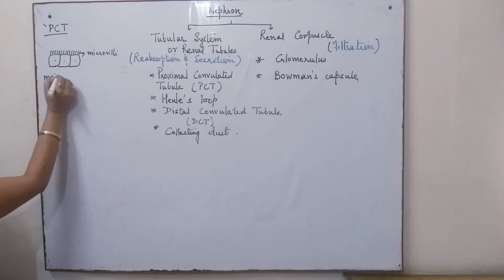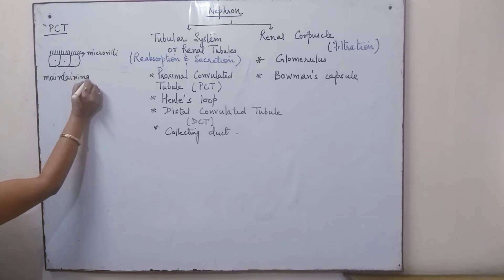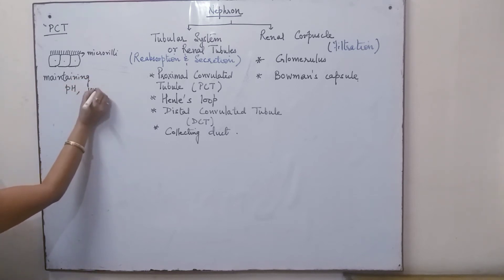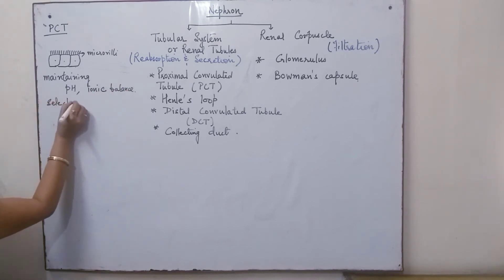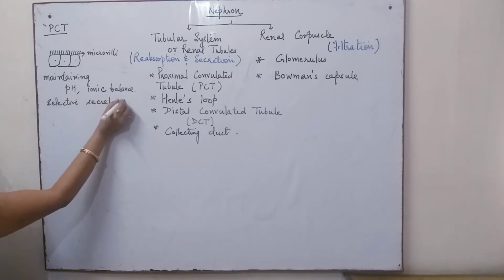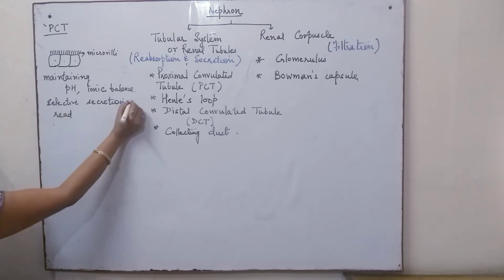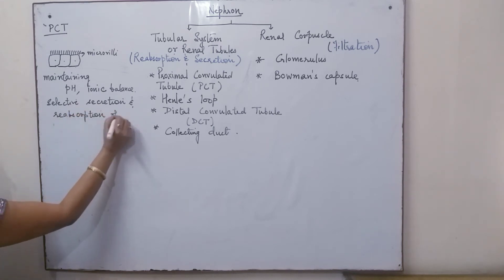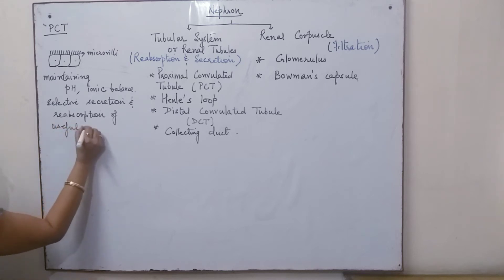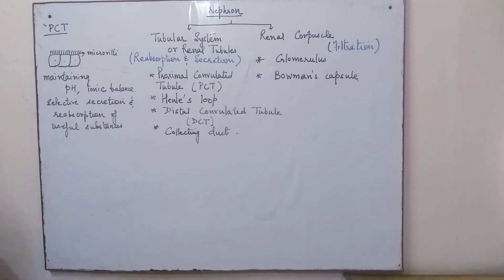The PCT helps in maintaining pH, ionic balance, and selective secretion, as well as reabsorption of useful substances. The cells have a large number of mitochondria to provide sufficient energy for the active absorption as well as the secretion.